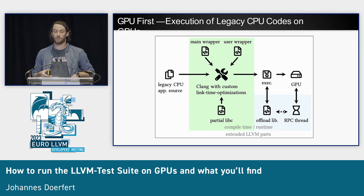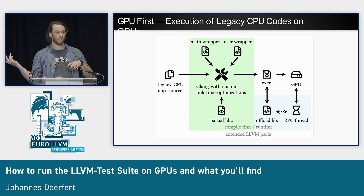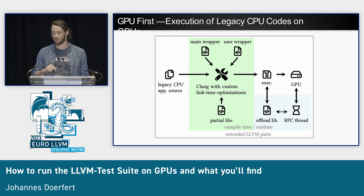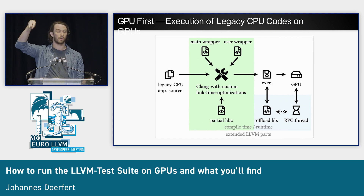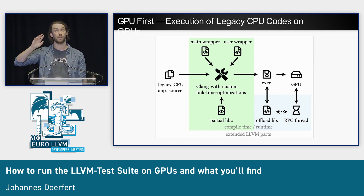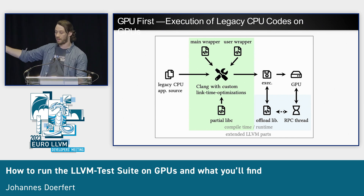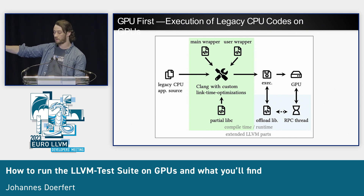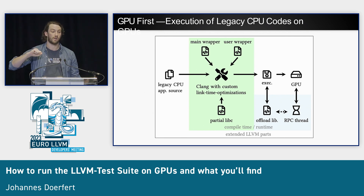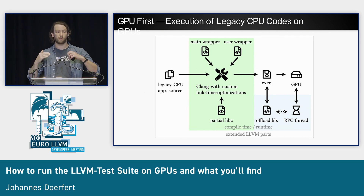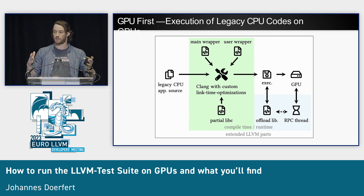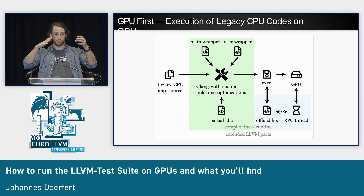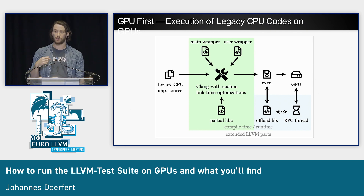How does it work? There are three components to it — I cannot show two of them here, you have to talk to me after. I show the main wrapper and the user wrapper. Those are effectively source files that we include into each application, into each translation unit. What matters is we have the RPC thread and offload library. Effectively, whenever we encounter an external function call inside of your program — think of your program compiled in LTO mode, monolithic LTO, so we see everything — if there is an external function call,